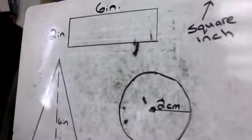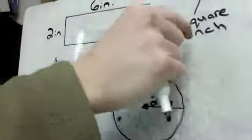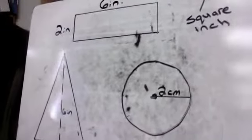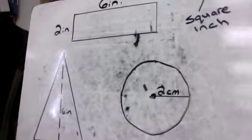Now, if we were doing square centimeters, it would be a square, and it would be one centimeter on each side. If it was a mile, it would be a mile on each side, and it would be a square.